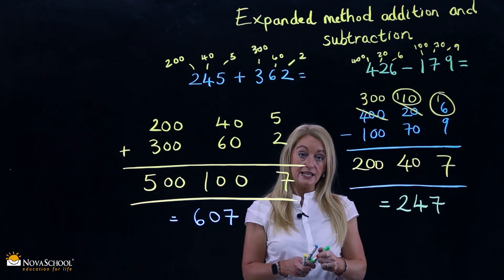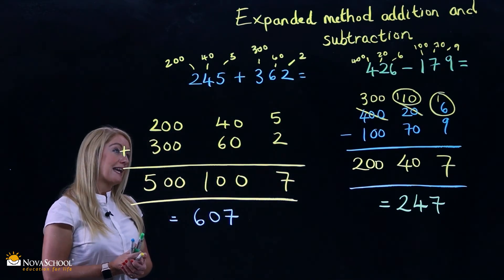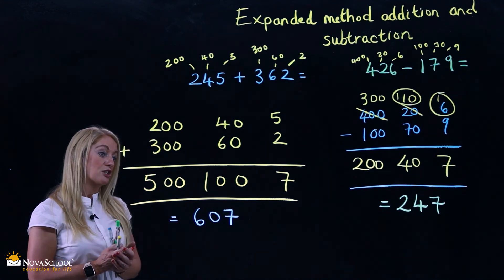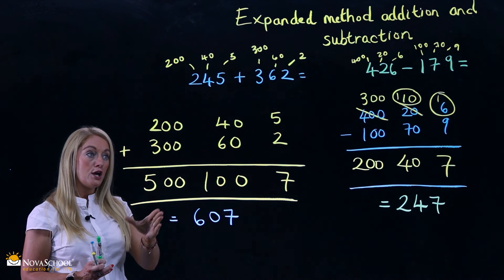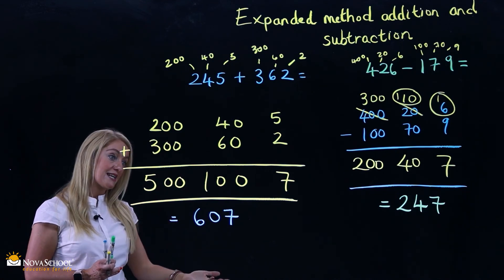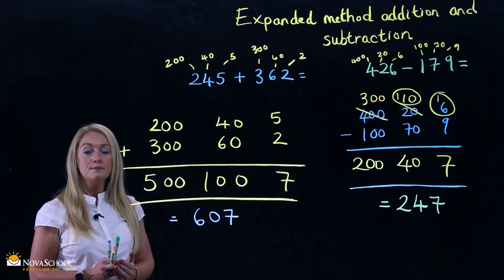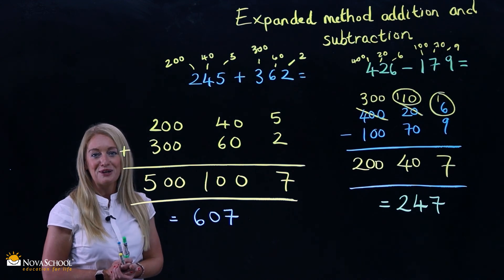Okay, everybody. Now let's recap. The expanded method for addition and subtraction has both ways. We partition, and then we follow the steps by adding or by subtracting in the correct columns for the partition numbers. Have a go and see what you think. Thank you very much.